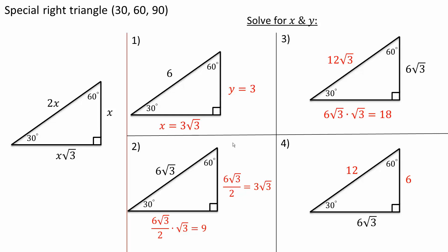Now for the second one. So 90 degrees corresponds to 6 square root of 3, and we know that 30 degrees is half of it. So we divide by 2 and we get 3 times the square root of 3. Now 60 degrees is x times the square root of 3, so this value times the square root of 3. So 3 times the square root of 3 times the square root of 3 would give us 3 times 3, which is 9.